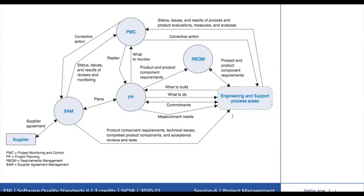The Project Monitoring and Control process area contains practices for monitoring and controlling activities and taking corrective actions. The project plan specifies the frequency of progress reviews and the measures used to monitor progress. The progress is determined primarily by comparing project status with the project plan. When the actual status deviates significantly from the expected values, corrective actions are taken to overcome those deviations. These actions can include re-planning, which requires using project planning practices.